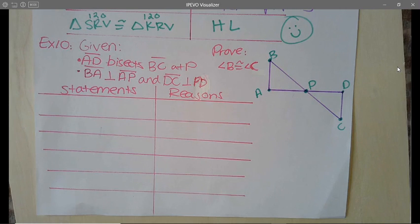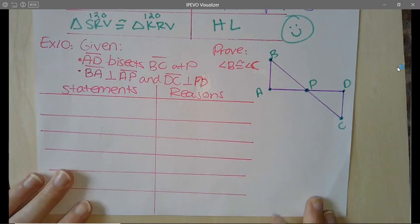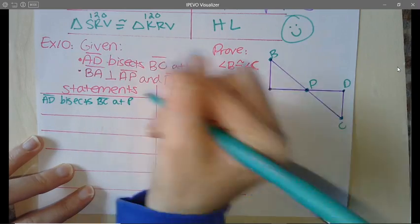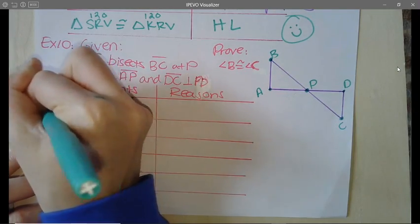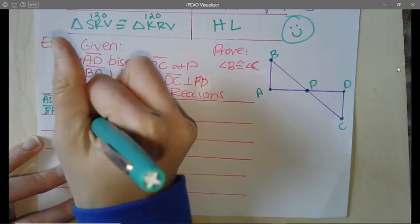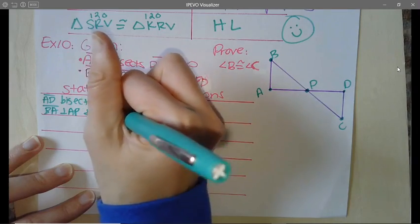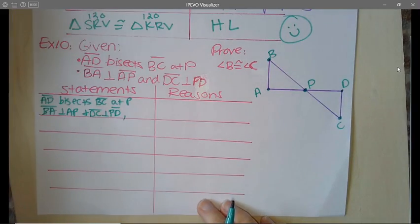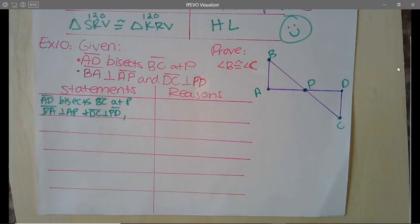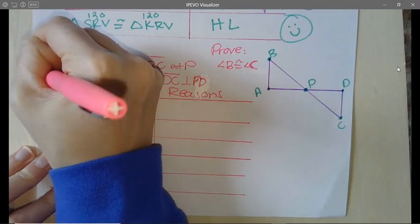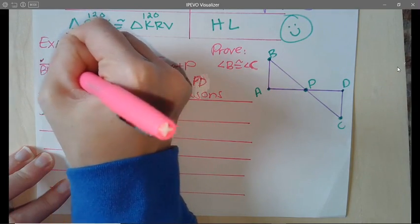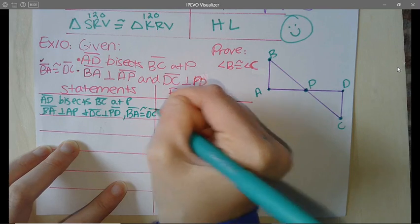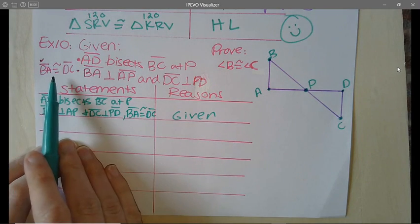Let's start with our given. We are given that AD bisects BC at point P. We also know that BA is perpendicular to AP, and DC is perpendicular to PD. The final given — which I almost forgot — is that BA is congruent to DC. So all of those are part of our given.